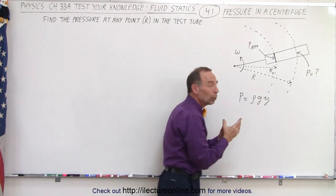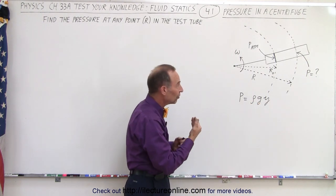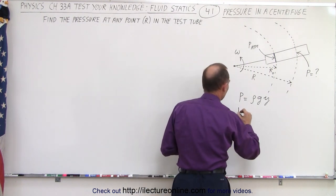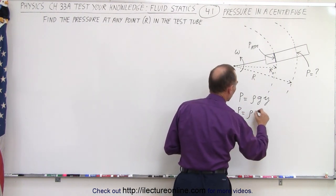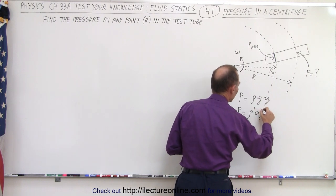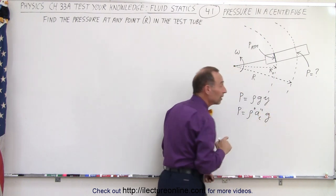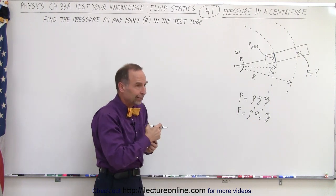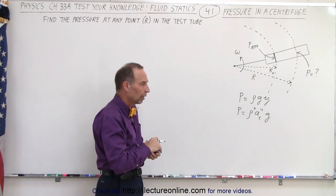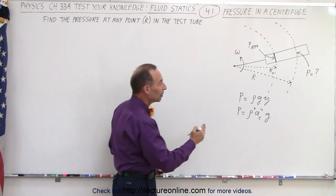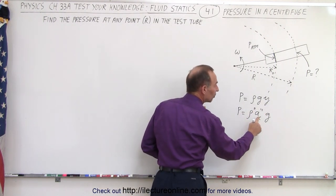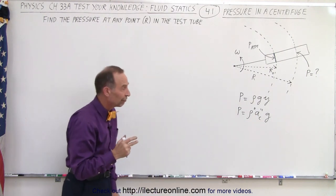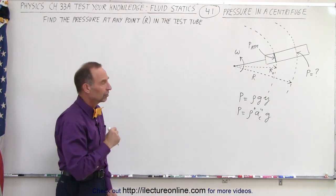But instead of g, which is a constant, g is now going to be replaced by the centripetal acceleration. So in this case, the pressure is equal to rho times the centripetal acceleration times y. Notice that this is not really g — it's what we call a simulated gravity. The centripetal acceleration depends upon the radius, and so therefore it is not a constant.